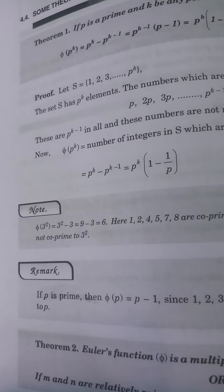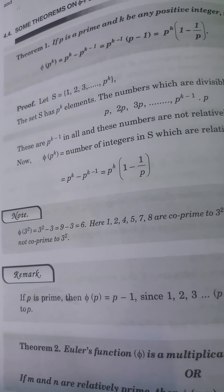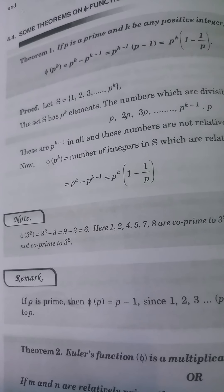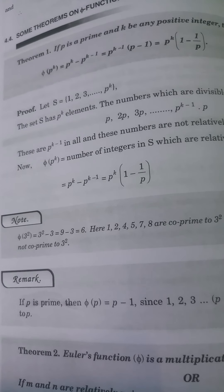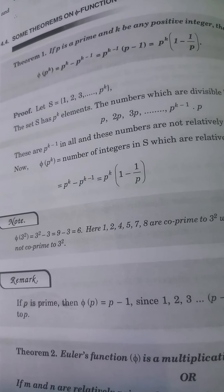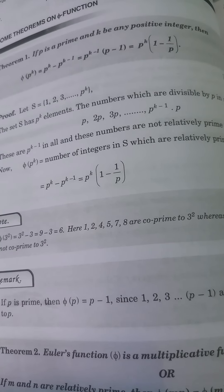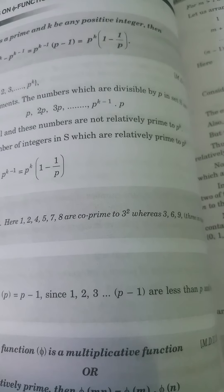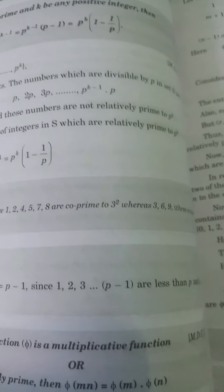So phi(3²) = 3² − 3 = 9 − 3 = 6. The numbers 1, 2, 4, 5, 7, 8 are co-prime to 9, while 3, 6, 9 — three in number — are not co-prime to 9.